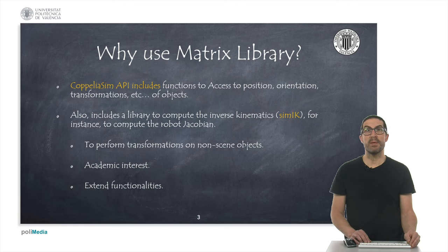Keep in mind that CoppeliaSim API includes functions that allow us to access the position or orientation of an object, its transformation matrix, etc. In addition to this, it also includes a plugin, CMI-K, which allows us to compute the inverse kinematics of a robot. Thus, the logical question is why do we need the matrix library and the classes associated with transformations, vectors, etc. that I have previously commented.